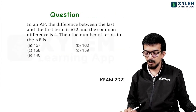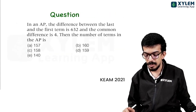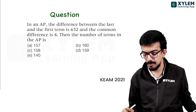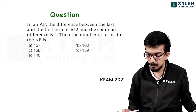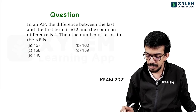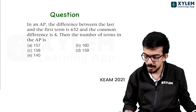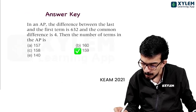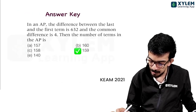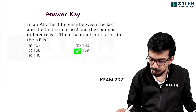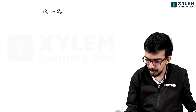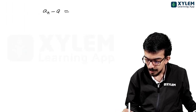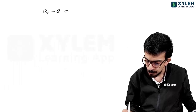In an AP, the difference between the last term and the first term is 632 and the common difference is 4. The number of terms in the AP is. The difference between the last term and the first term, an minus a, is equal to 632.